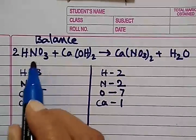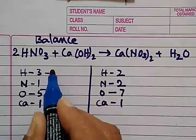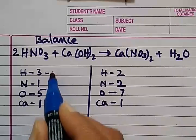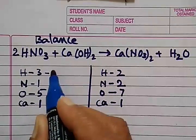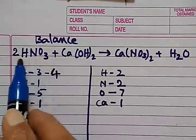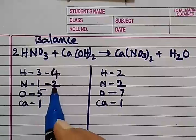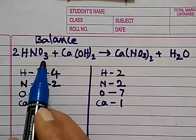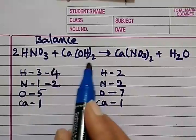Hydrogen has become two here and two here, it has become four. Nitrogen now it has become two. Oxygen it has become three into two six, six plus two it has become eight and this calcium remains as one.